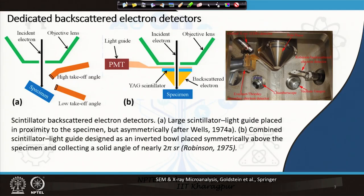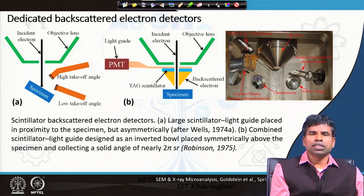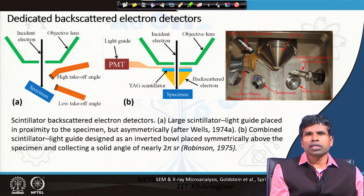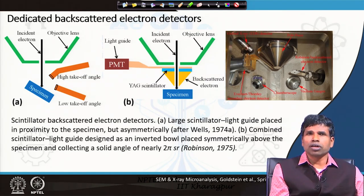In the previous case of the secondary electron ET detector, we used to provide a bias voltage of around 10 to 12 kV to accelerate the secondary electrons and increase their energy when they strike the scintillator material to produce light. But with backscattered electrons, which have higher energy, we do not need to provide a bias to the scintillator — it can remain unbiased and still collect enough backscattered electrons to provide a signal. Secondary electrons have lower energy, so without applying a bias to that detector or scintillator, we would not collect any secondary electrons at all.